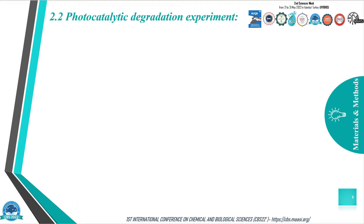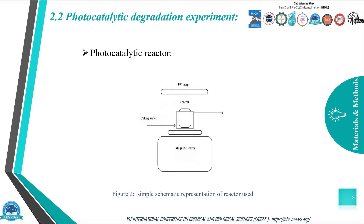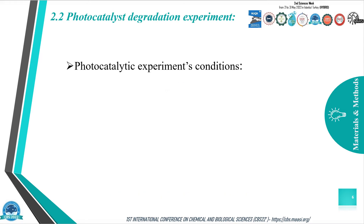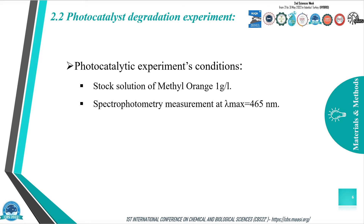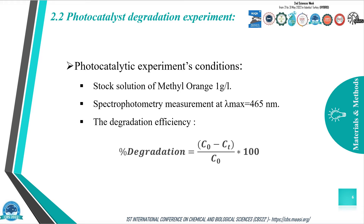Now we pass to the photocatalytic degradation experiment. The photocatalytic reactor is presented in this scheme with a double glass jacket and a cooling water system to keep the reaction under 25°C, under a magnetic stirrer and a UV light source at lambda max 235 nanometers. The photocatalytic experiment conditions were a stock solution of methyl orange at 1 gram per liter. We use spectrophotometry measurements at lambda max 465 nanometers and calculate the degradation efficiency with this equation.